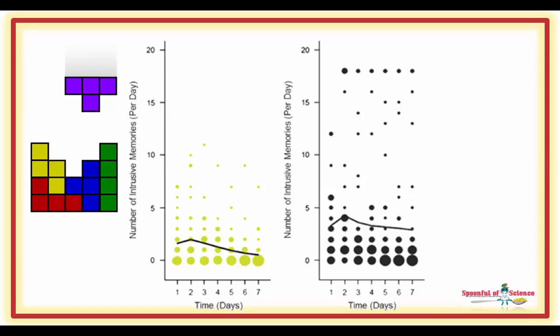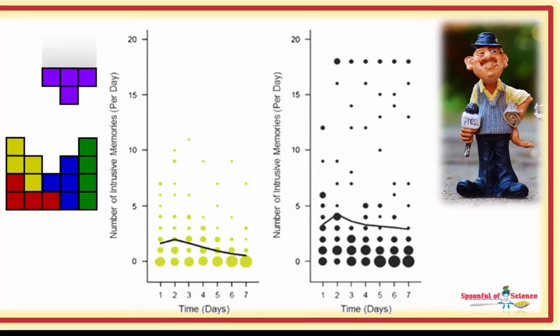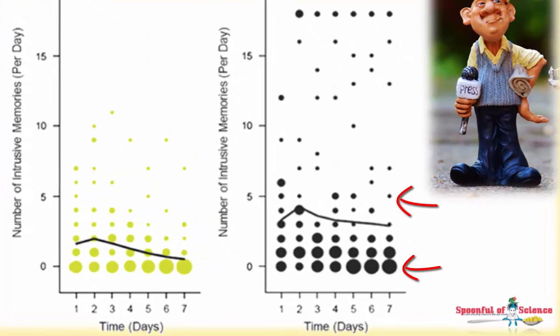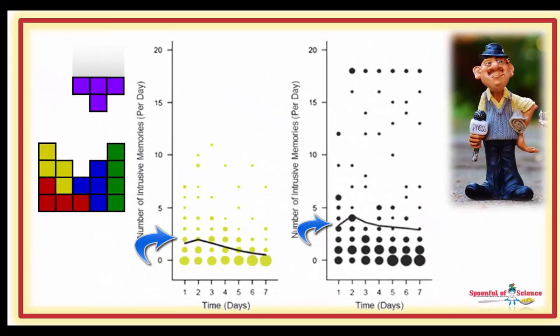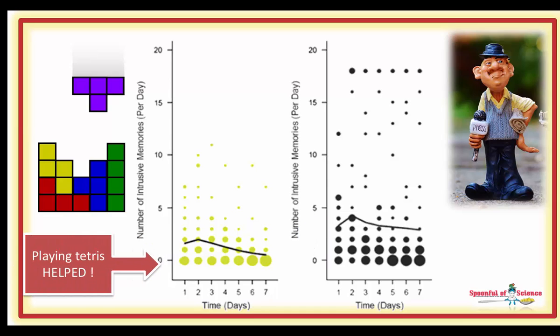The Tetris players are shown on the left, and the reporters on the right. The size of the circles reflects the number of people reporting an intrusive memory. The solid lines is a summary of the data. Playing Tetris definitely accelerated recovery.